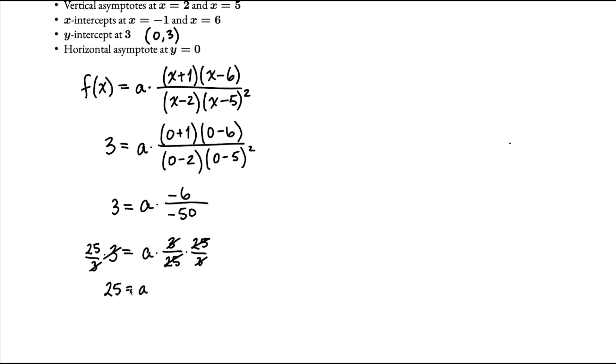And so we'll take that number and put it back in up here. And so our function, by plugging that a in, we get 25 times x plus 1 times x minus 6 over x minus 2 times x minus 5 squared. And that's going to be our function that has these given properties.